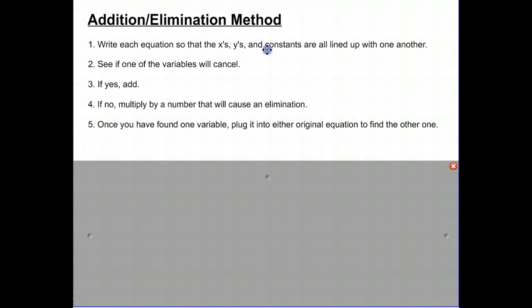There are about five steps in the addition elimination method, and not all of them have to be used all the time. First step is that we need to write our equations so that the X's, the Y's, and the constants are all lined up. So anything with an X term is lined straight in a straight line, the Y's are lined straight together, the constants are lined straight together, the equal signs match up.